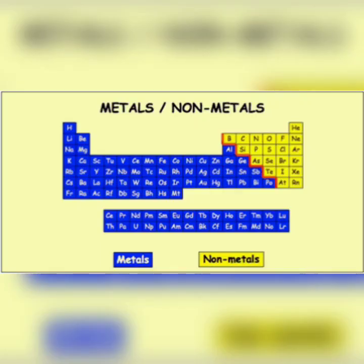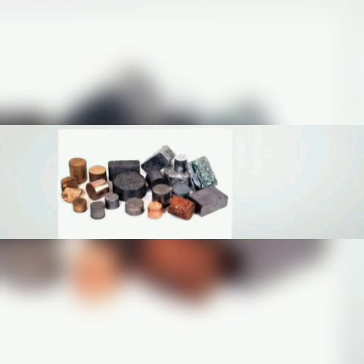In this periodic table we see blue color as metal and yellow color as non-metal. In our daily life we use metals like iron, copper, gold, silver, etc.